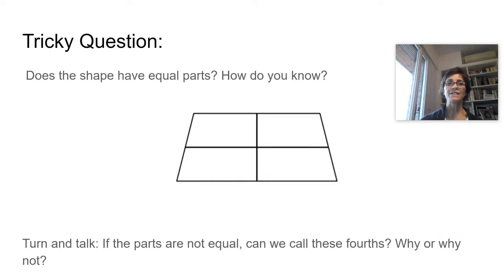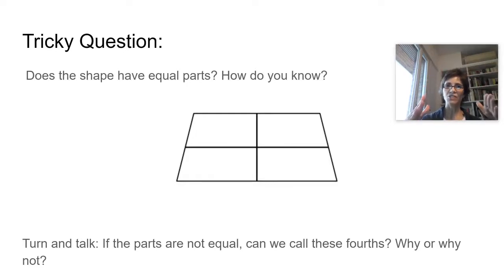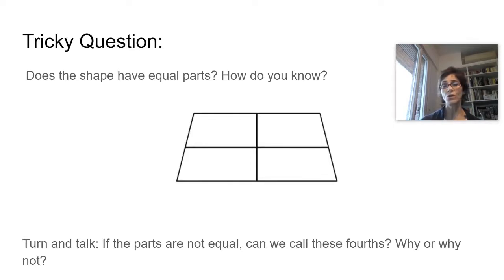Tricky question — does this shape have equal parts? Look carefully. Are all these parts the same? It kind of looks like it's not a rectangle — it looks a little bit like a trapezoid. It almost looks like a rectangle, but they're not all the same. The parts are not equal parts. So if the parts are not equal, can we call these fourths? No, we can't. Because we can only talk about a fraction when we divide the whole into equal parts. If the parts are not equal, we're not talking about fractions. So these are not fourths — they're not four equal parts.